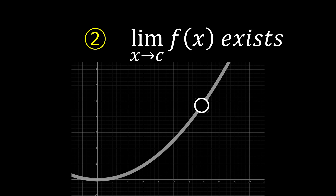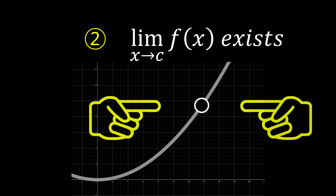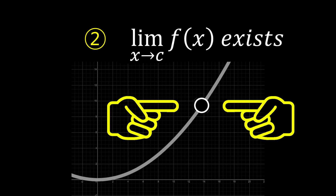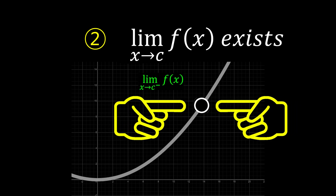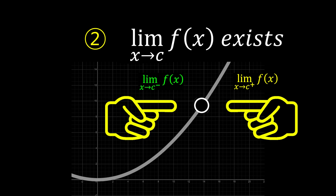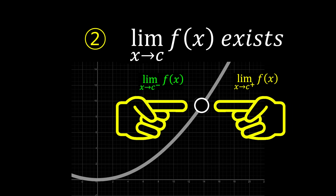Second, as x approaches c, the limit of f must exist. For the limit of f to exist, the values of the left-hand limit and the right-hand limit must be equal. In other words, the two fingers in the picture must meet for the limit to exist — the approaching fingers from both sides must meet.